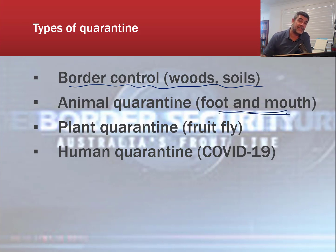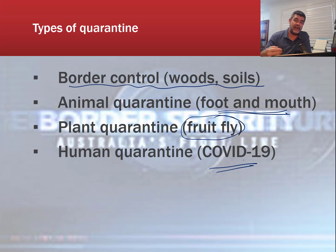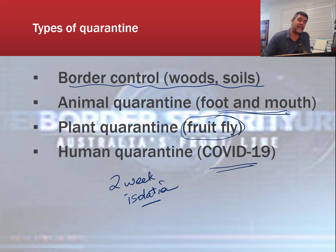Certain diseases like foot and mouth we've been reasonably successful at keeping out of the country, or at least limiting the spread of infection, as a result of animal quarantines. Fruit flies are a particular pest of crops and fruits. More recently, we've experienced the whole issue around COVID-19, where we've had often two-week periods of isolation for travellers coming in — particularly from hotspots — to keep those people away from the rest of the population until we're as sure as we can be that they're not infectious.